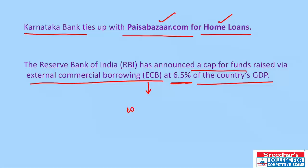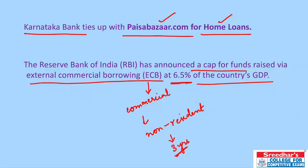External Commercial Borrowings (ECB) refer to commercial loans given in the form of bank loans, securities, instruments, buyers' credit, suppliers' credit, etc., for non-resident lenders with a minimum average maturity period of three years. The RBI has announced a cap for funds raised via ECB at 6.5% of the country's GDP.